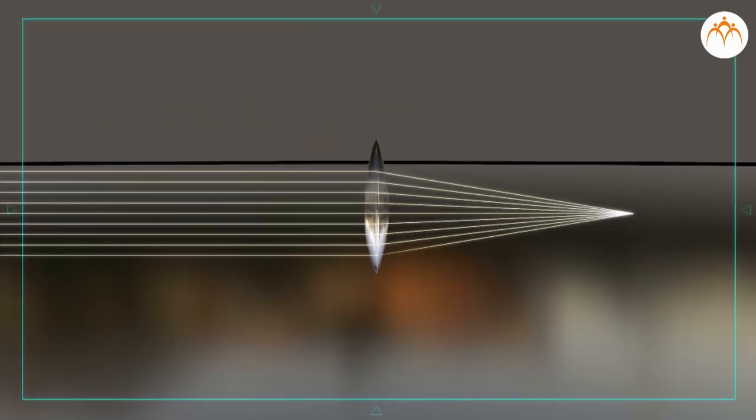These refracted rays converge at one point on the other side of the lens. The point is known as focus or principal focus. The distance between the principal focus and the optical center is called focal length of the given lens.